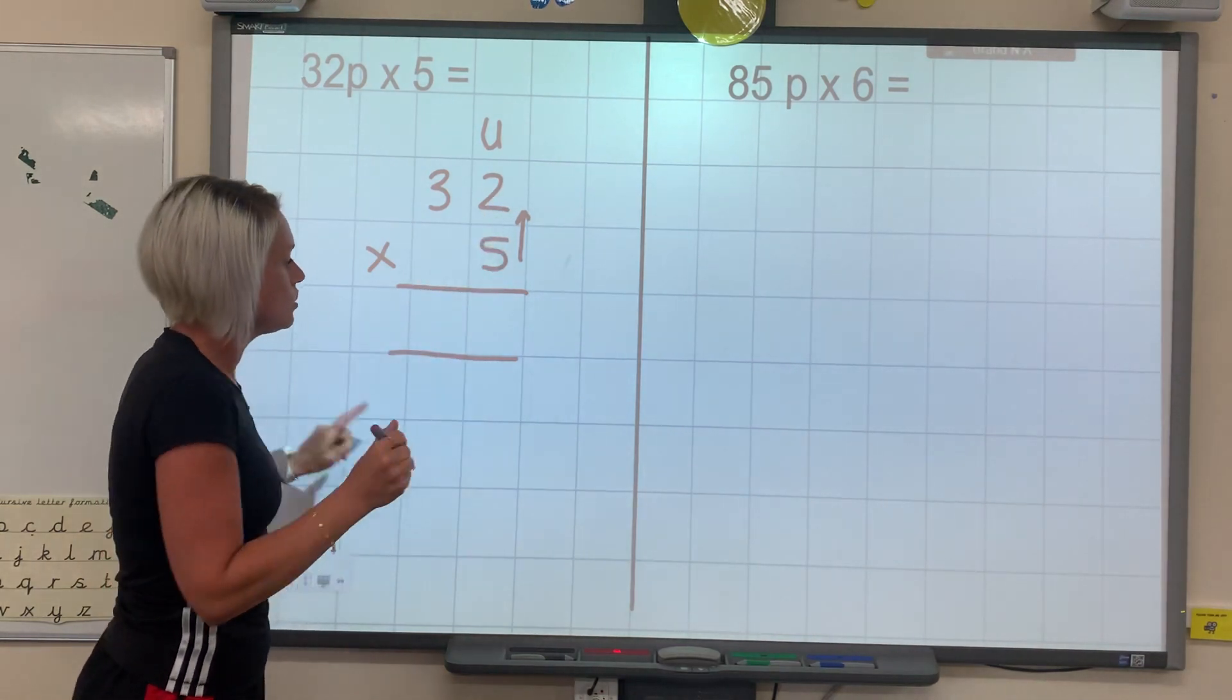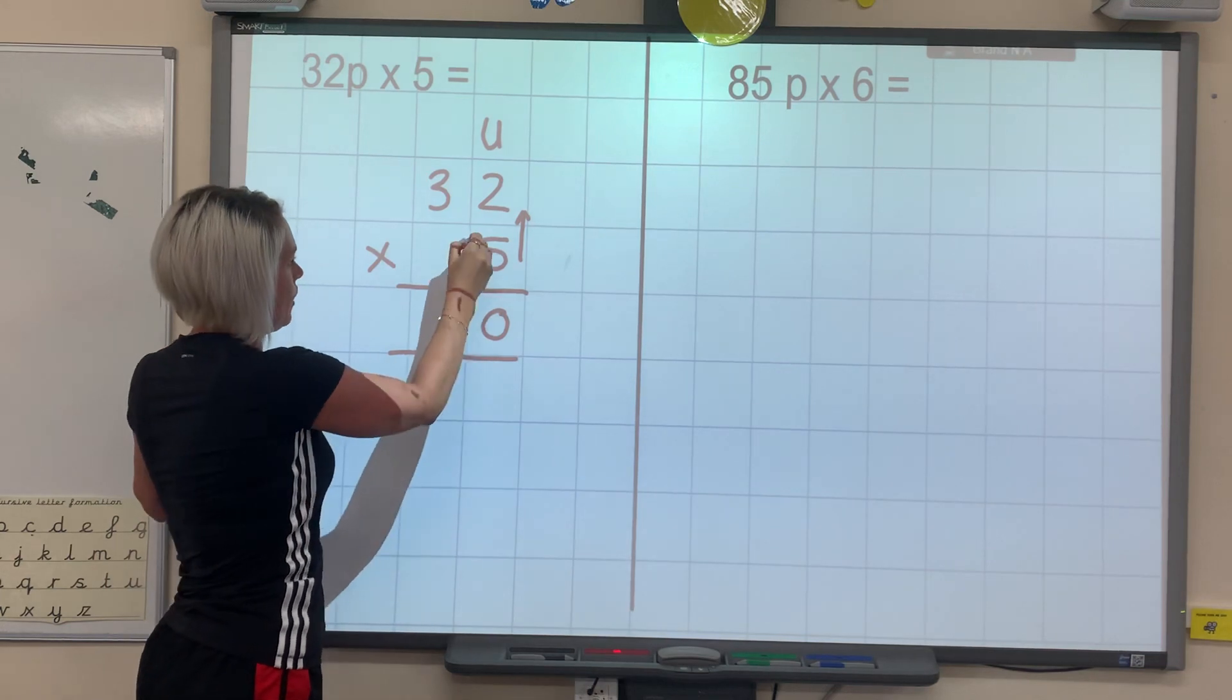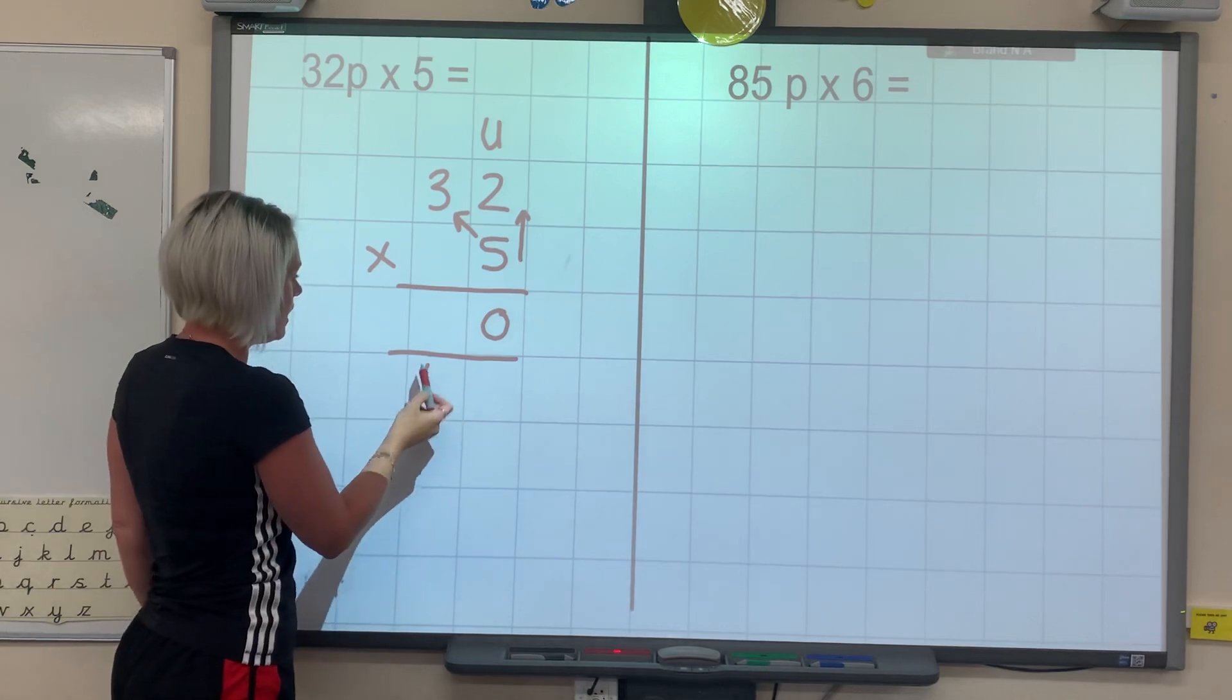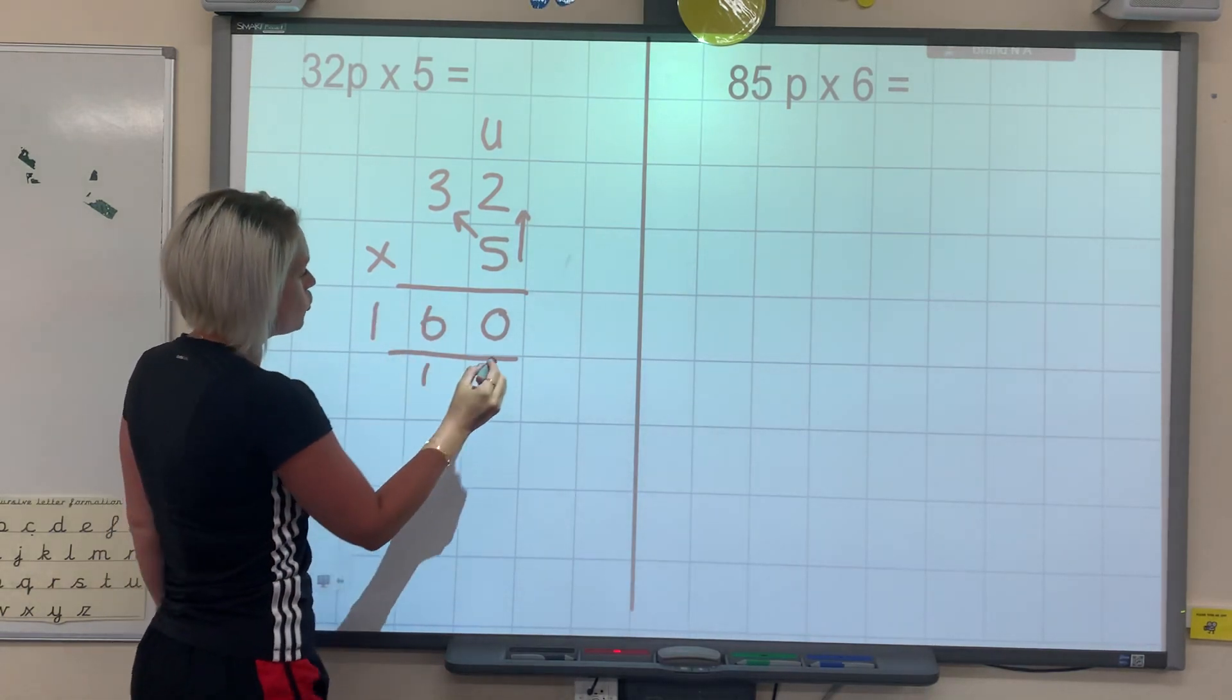So 5 times 2 is 10. Okay, and then we go this way like that. So 5 times 3 is 15, add 1, 16. So we've got 160.